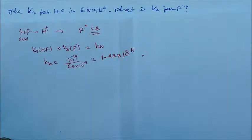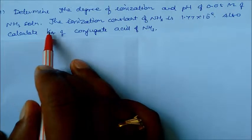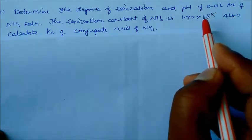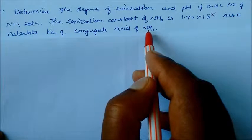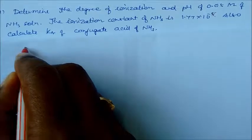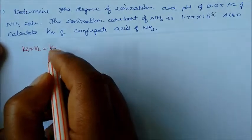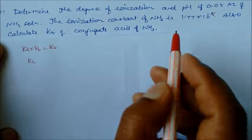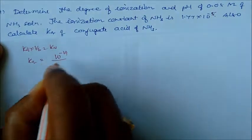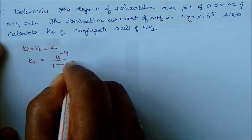Determine the degree of ionization and pH of a 0.05 M ammonia solution. The ionization constant of ammonia is 1.77 × 10⁻⁵. Also calculate the Ka of the conjugate acid of ammonia. Using Ka × Kb = Kw, Ka = 10⁻¹⁴ divided by Kb. Kb is given as 1.77 × 10⁻⁵, so Ka = 5.65 × 10⁻¹⁰.